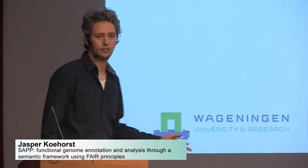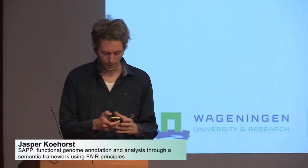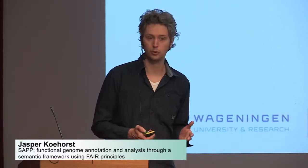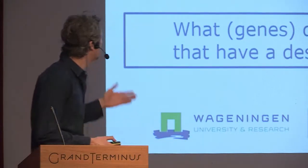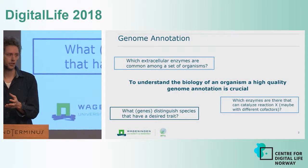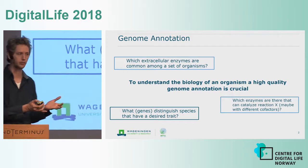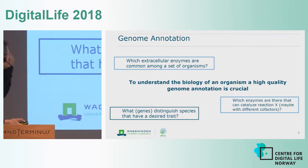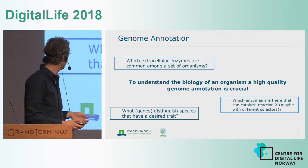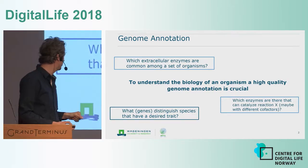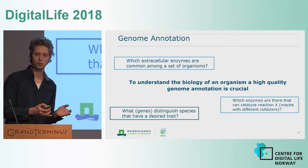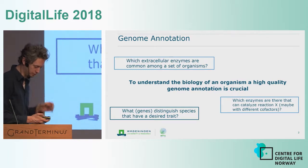This talk is about semantic annotations — looking at how to make genome annotation FAIR, but also more useful. When you are looking at your metagenomic dataset, your salmon fish, or your bacterial genome, you often have questions: which extra enzymes are common among a set of organisms, or what genes distinguish a certain species or that have a desired trait. These are relatively simple questions, but are very difficult to answer.